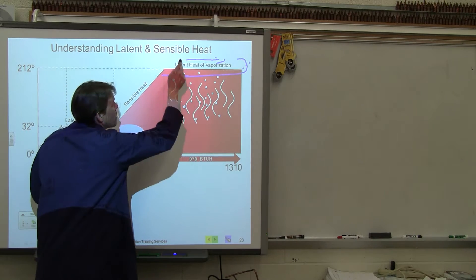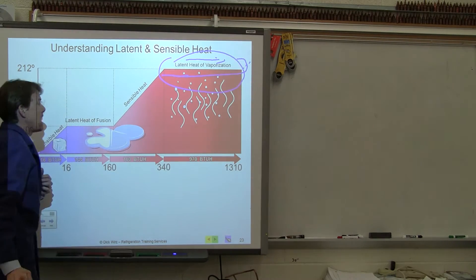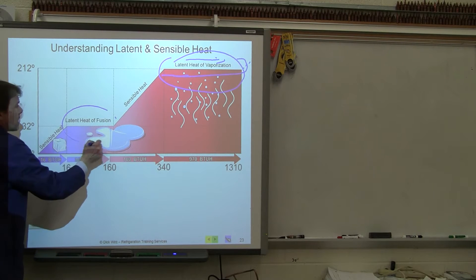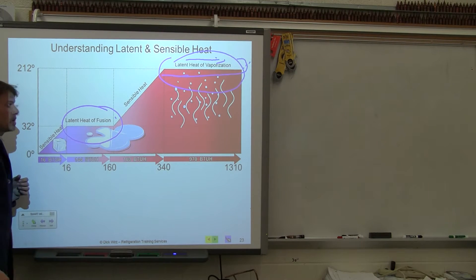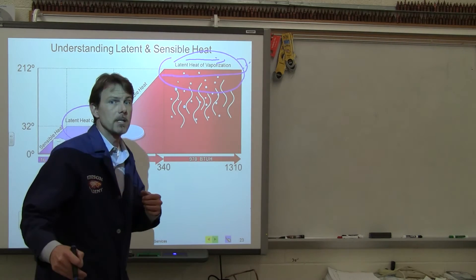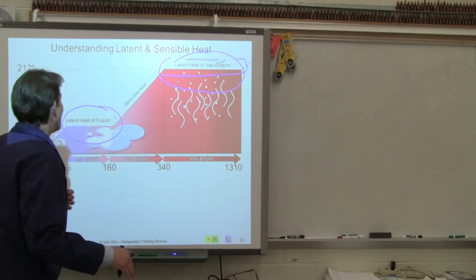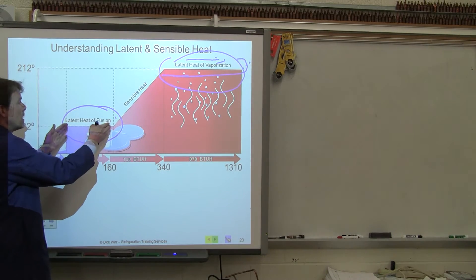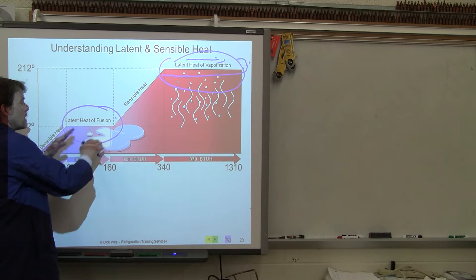We've talked about that. We've seen that in the graph. But right here is where all our calculations for tonnage get done. You might hear people say that you have a 1 ton unit, 2 ton unit, 3 ton unit. They get that number from this part of the latent sensible heat graph.